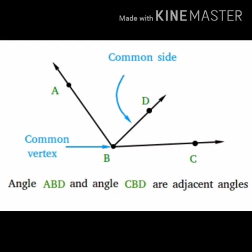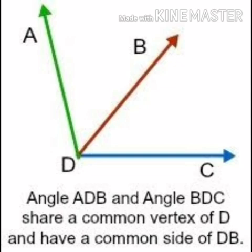Now we will see the second example of adjacent angles. Angle ADB and angle BDC have a common vertex of D and have a common side of DB. So here is what we studied: what are adjacent angles, with the help of an example.